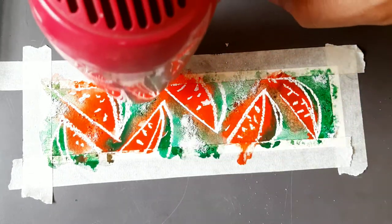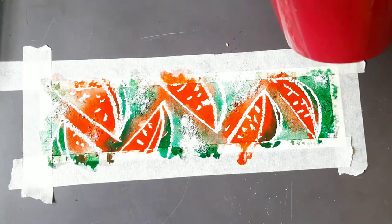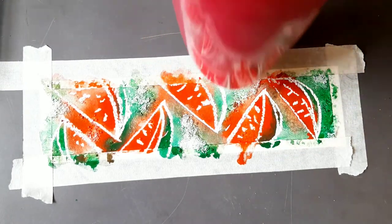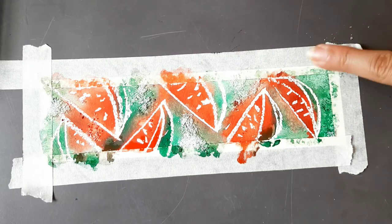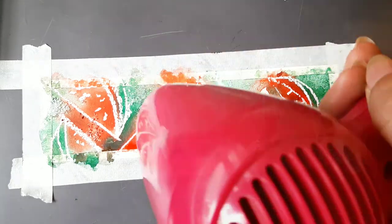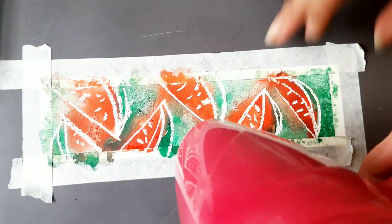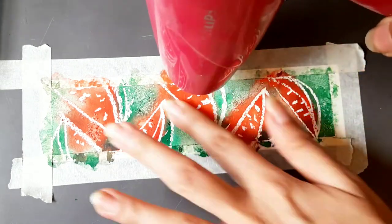I'm using my hairdryer to quickly dry my painting. Wherever I've applied the salt, you will see there is a beautiful texture where the color has been soaked by the salt and it looks grainy there.